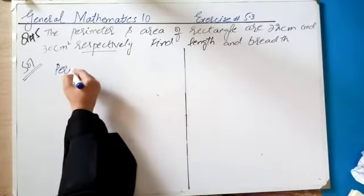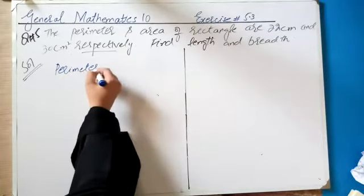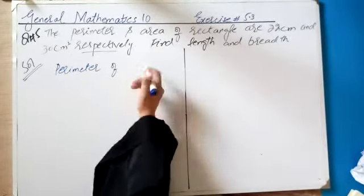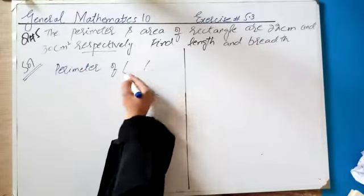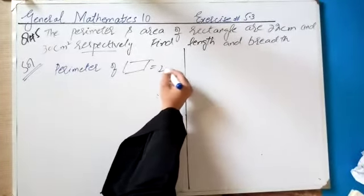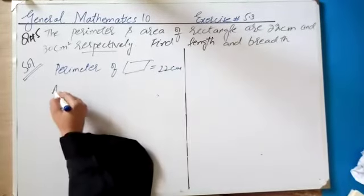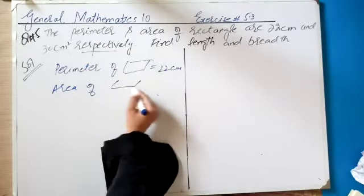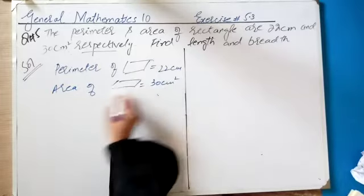Perimeter is given. Perimeter of rectangle — we have a shape, I will make a shape. Rectangle perimeter is equal to 22 cm. Area of rectangle is 30 cm square.